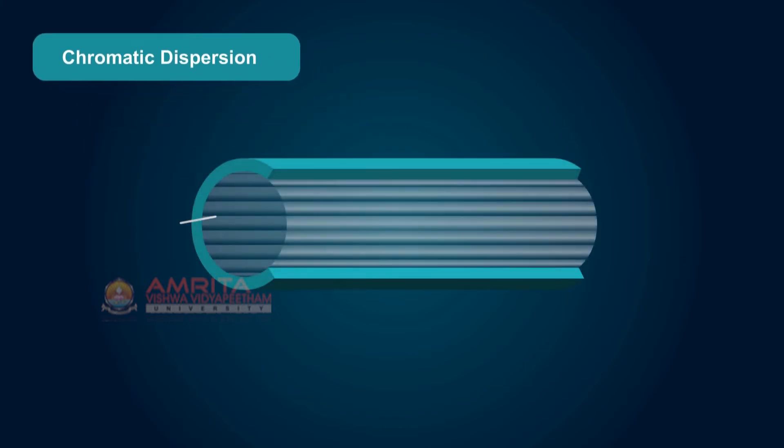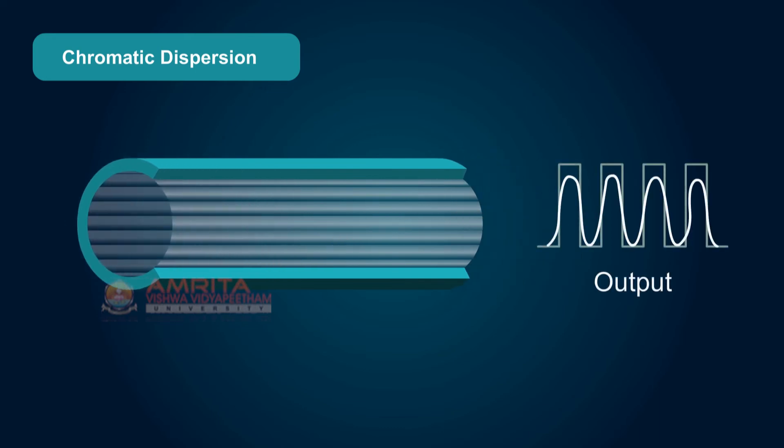Chromatic Dispersion: Chromatic Dispersion is caused by delay due to differences among the group velocities of the different wavelengths composing the source spectrum. The consequence of chromatic dispersion is a broadening of the transmitted impulses.